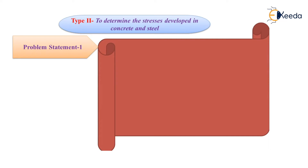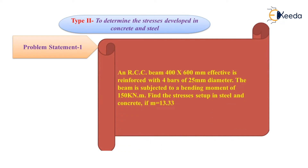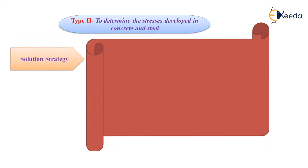Here we will see one problem. The problem statement is: An RCC beam 400 by 600 mm effective is reinforced with 4 bars of 25 mm diameter. The beam is subjected to a bending moment of 150 kNm. Find the stresses set up in steel and concrete, if M is equal to 13.33. The width of beam is given as 400 mm and effective depth is given as 600 mm, and modular ratio M is given as 13.33.